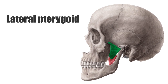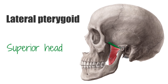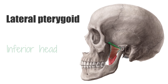The lateral pterygoid muscle has two heads, which lie almost horizontally to each other. The small superior head runs from the infratemporal crest of the sphenoid to the articular disc of the temporomandibular joint. The much larger inferior head courses from the pterygoid process of sphenoid to the condylar process of mandible.